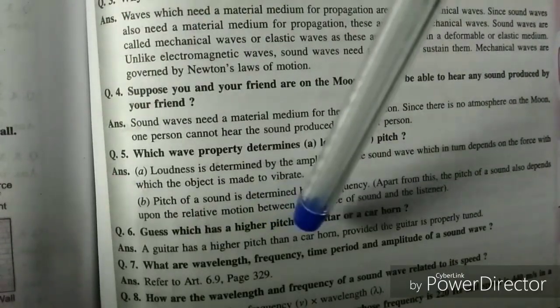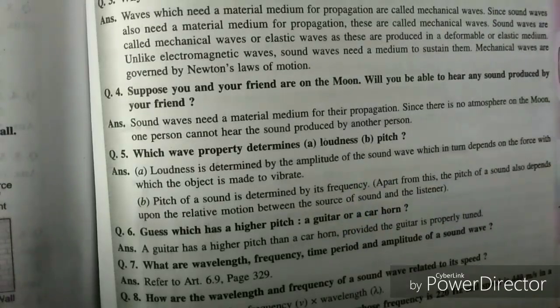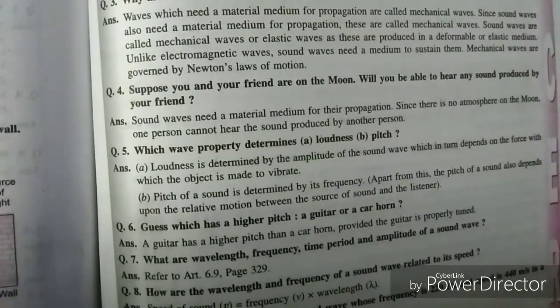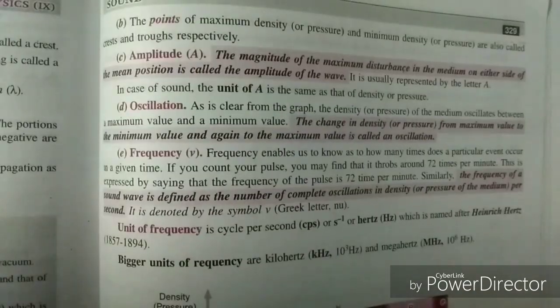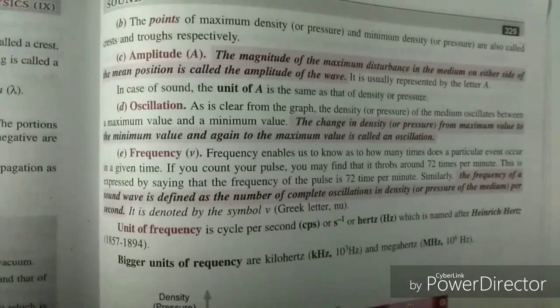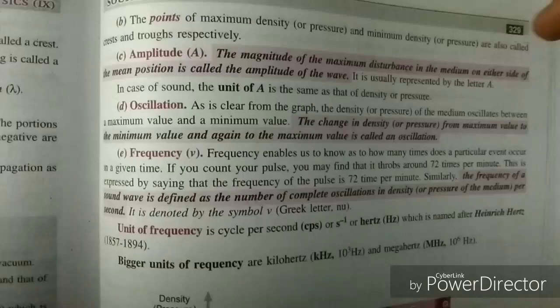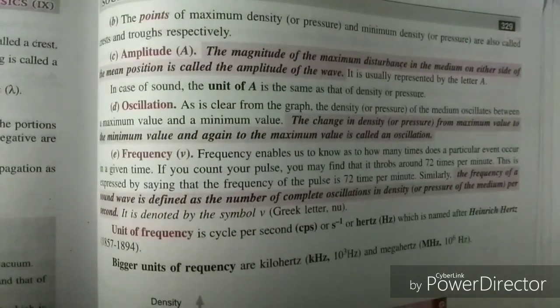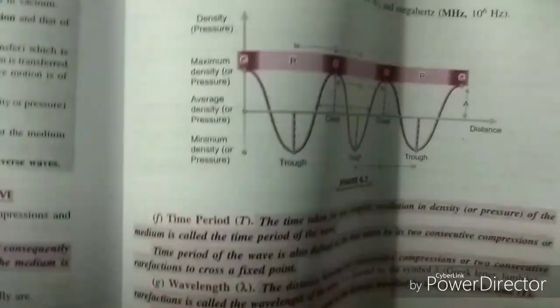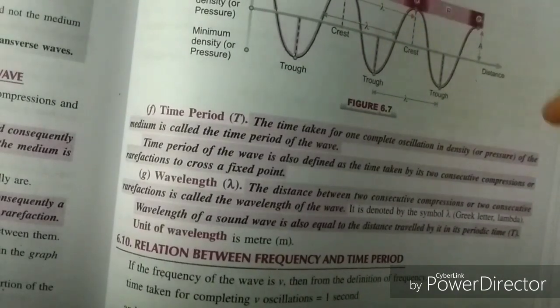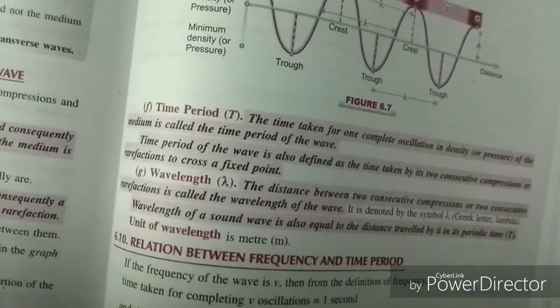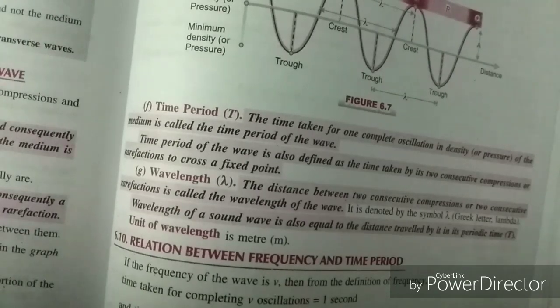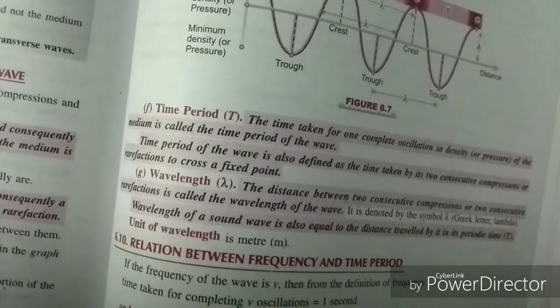What are wavelength, frequency, time period and amplitude of a sound wave? So I will just show the solution. So these are the solutions. You have the amplitude's definition, you have oscillation, frequency, units of frequency, then you have your time period, wavelength. So I hope these are clear and write as per your NCERT textbook. Okay, so let's see the next question now.